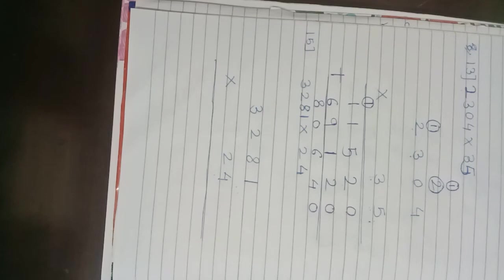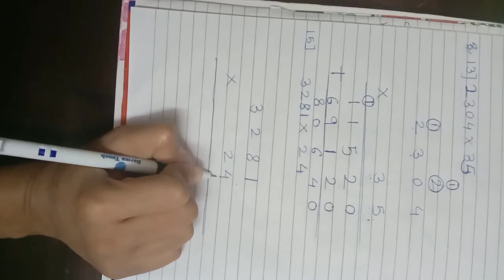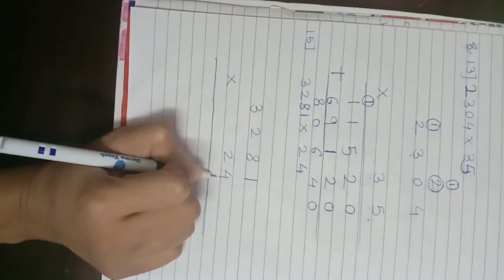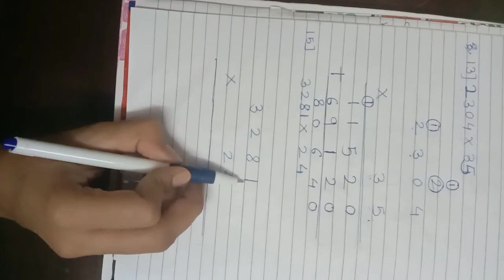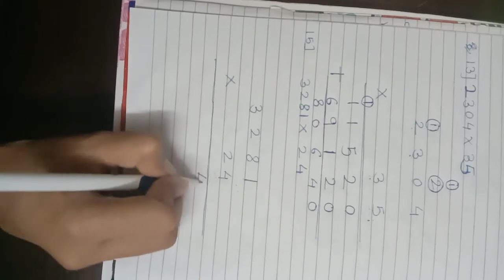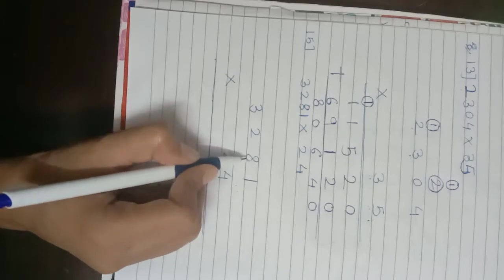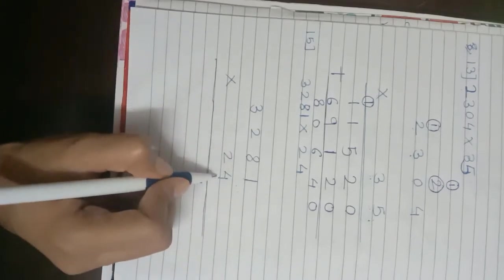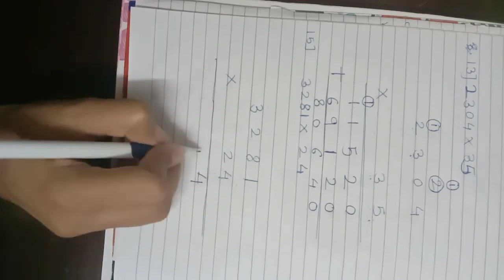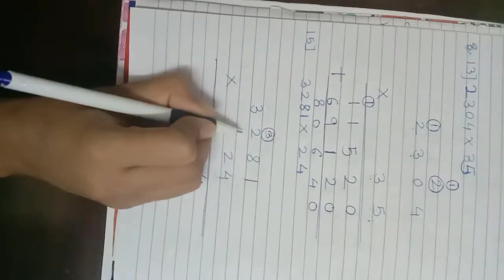The ones place digit of the multiplier is 4. 1 multiplied by 4 is 4; write 4. 8 multiplied by 4 is 32; write 2 under the tens place column and carry 3 to hundreds place. Hundreds place digit is 2: 2 multiplied by 4 is 8; 8 plus carry 3 is 11. Write 1 under hundreds place and carry 1 to thousands place.